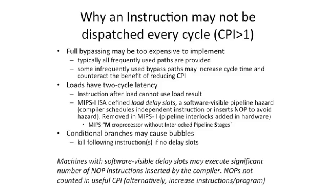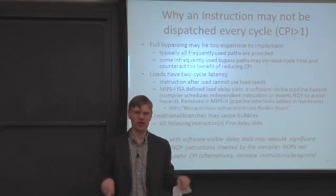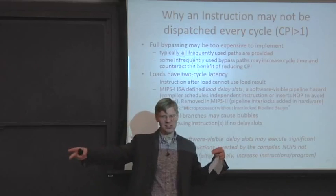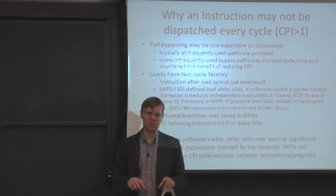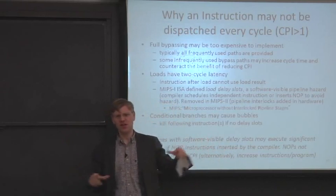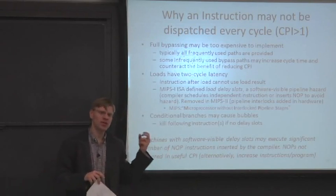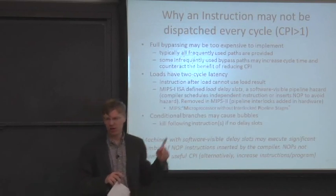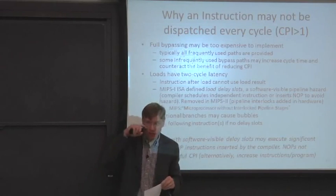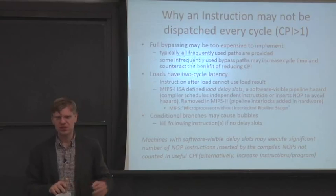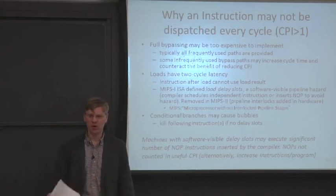A good example is a modern Core i7 machine. They actually don't bypass between all the different functional units from all the different locations, because they can execute about six instructions per cycle and have many stages in the depth of their pipe — they'd have to bypass out of 100 different places for every new source operand. So typically you figure out the common forwarding paths that are needed and build those. The infrequently used ones you just won't build, which helps cycle time but hurts CPI.